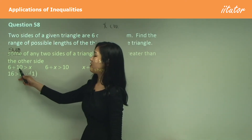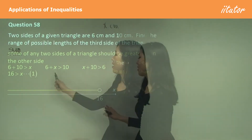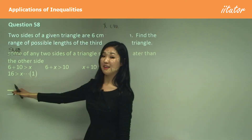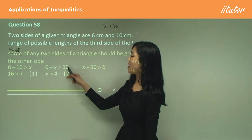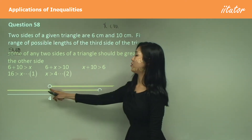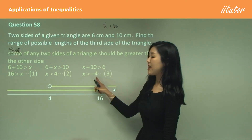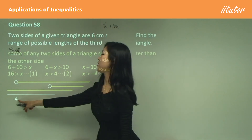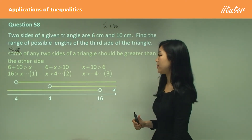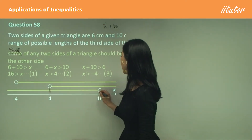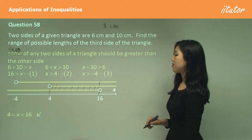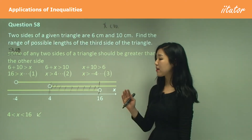Solving: 6 + 10 = 16, so x < 16. From 6 + x > 10, x > 4. From x + 10 > 6, x > −4. Plotting on a number line, the common region for all three inequalities is 4 < x < 16. So the third side must be between 4 and 16 centimeters.